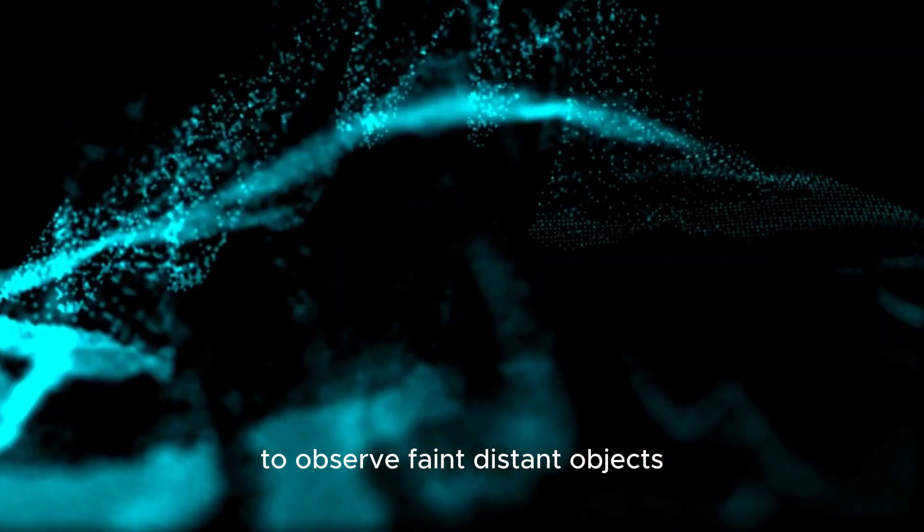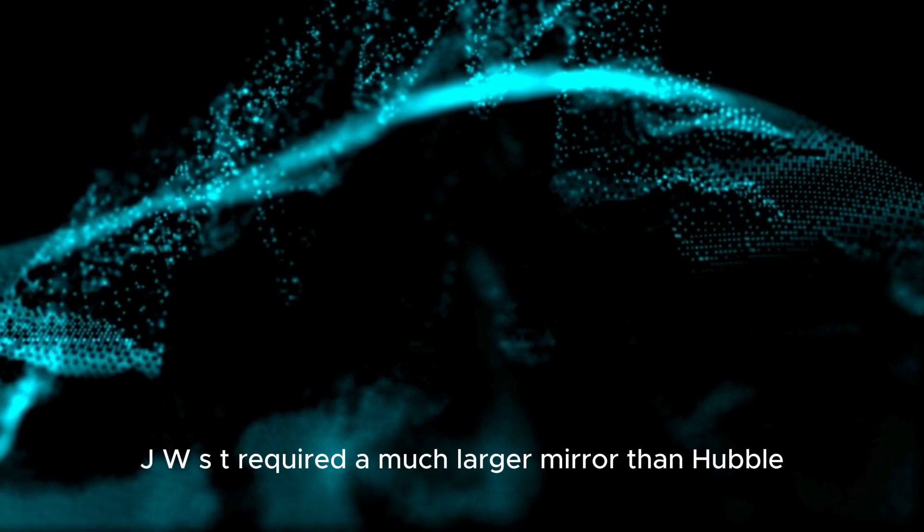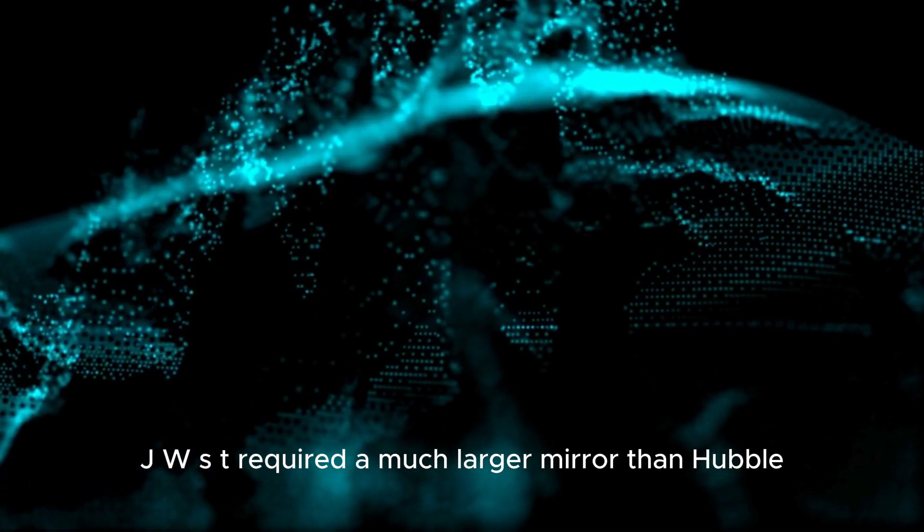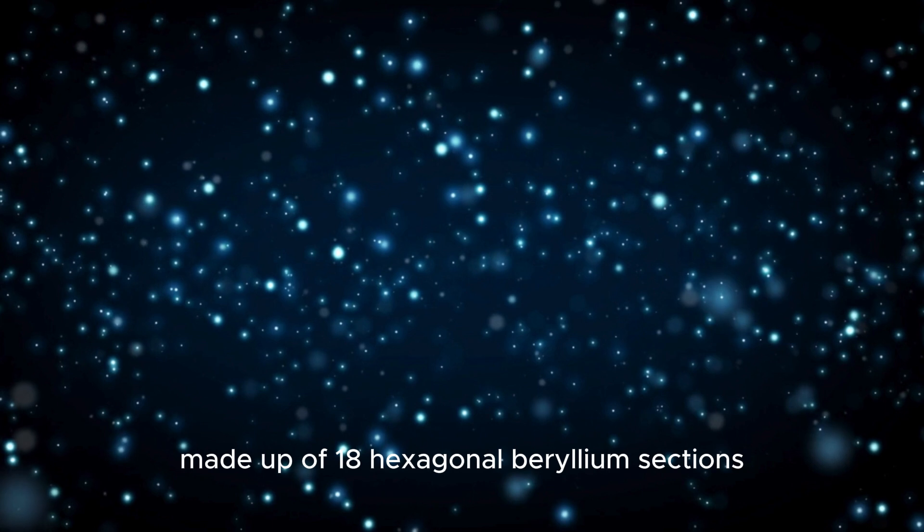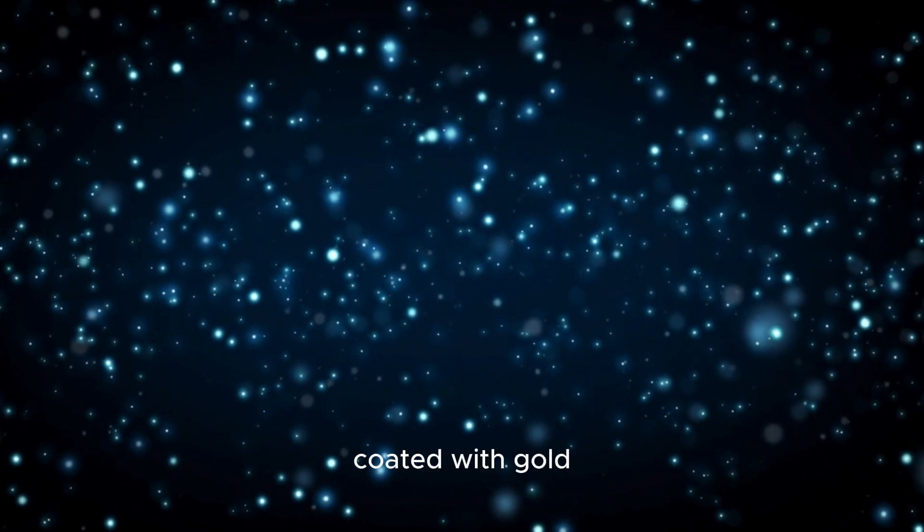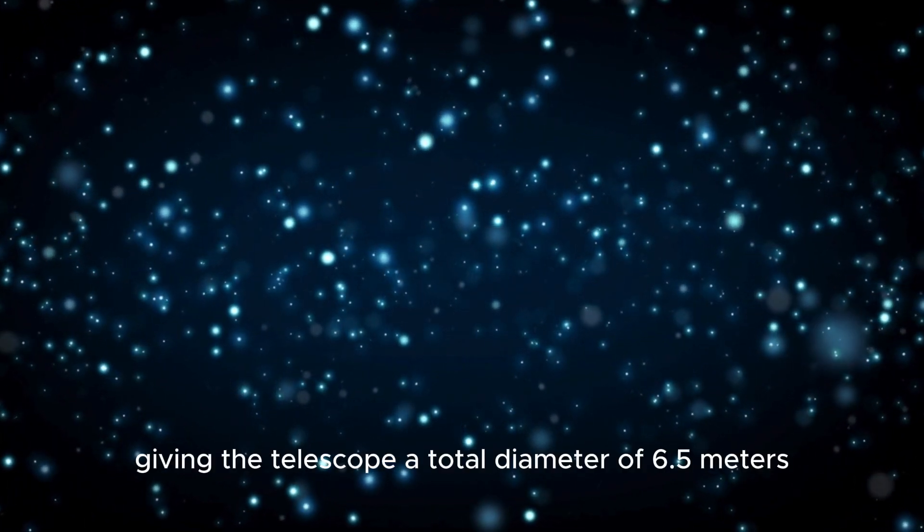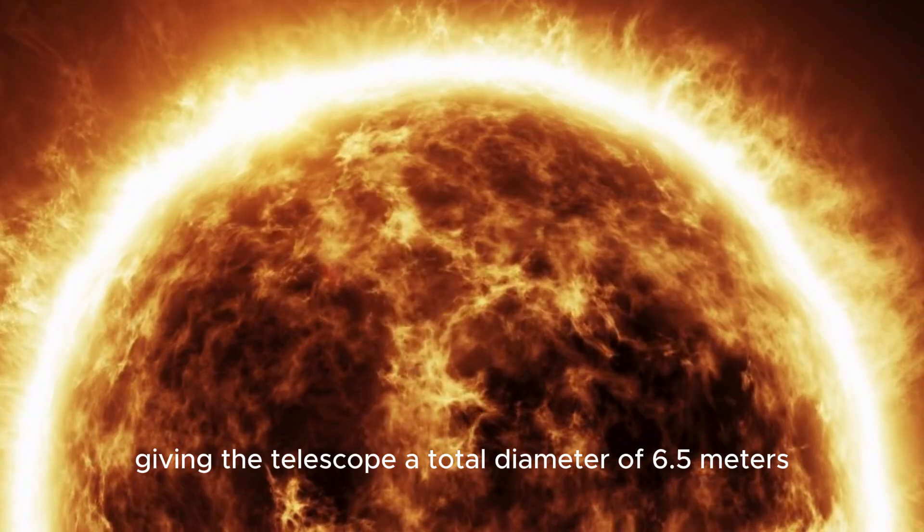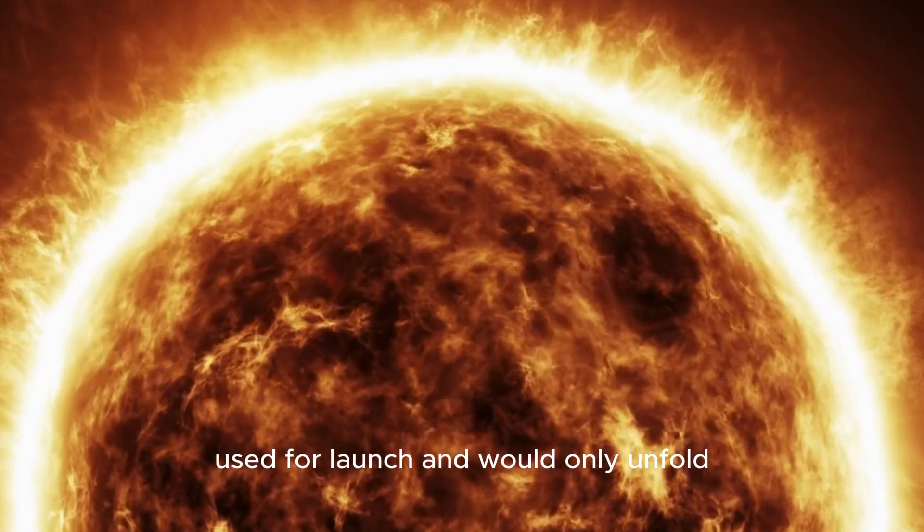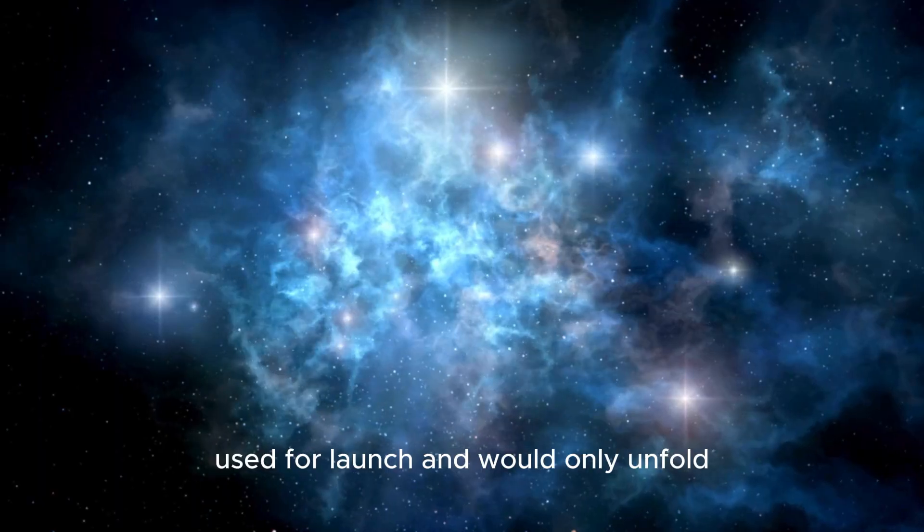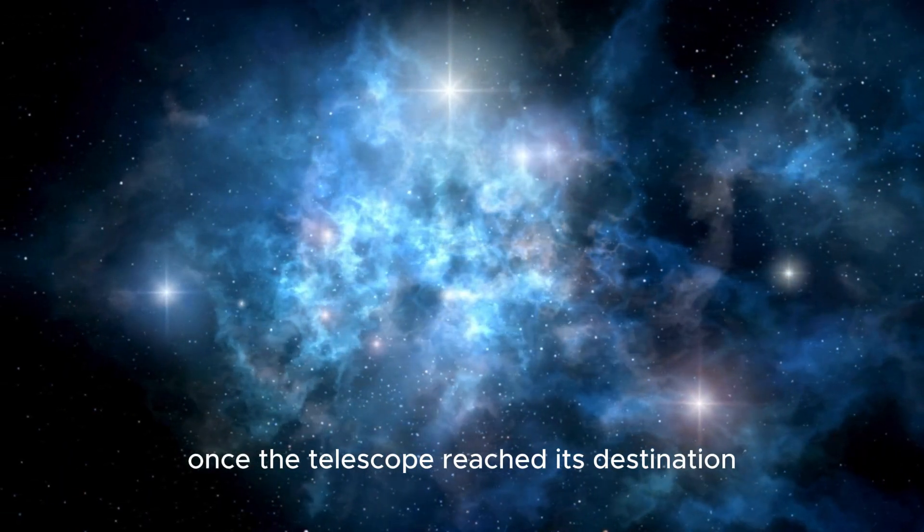To observe faint, distant objects, JWST required a much larger mirror than Hubble. The solution was a segmented mirror made up of 18 hexagonal beryllium sections coated with gold, giving the telescope a total diameter of 6.5 meters. This mirror had to be folded to fit inside the Ariane 5 rocket used for launch and would only unfold once the telescope reached its destination.